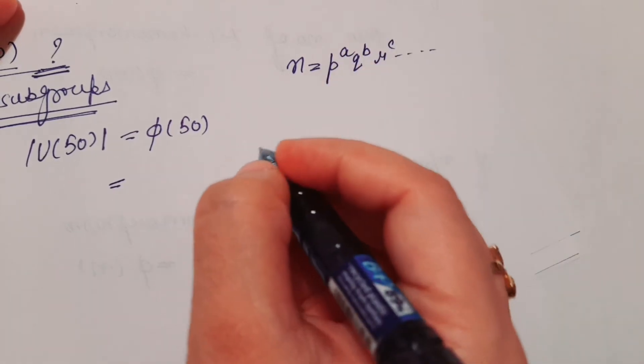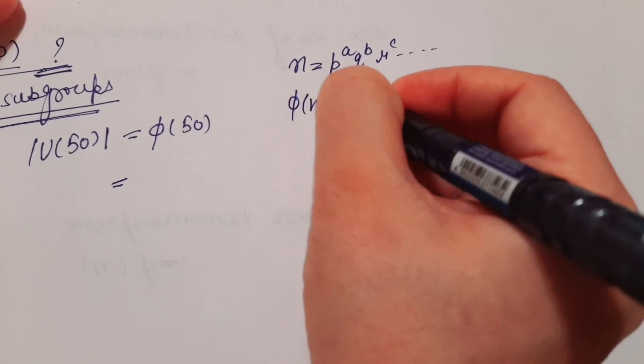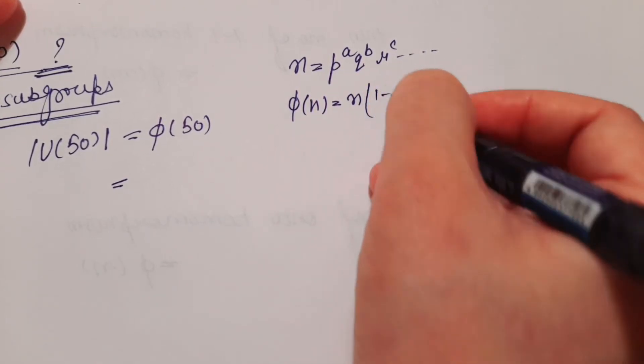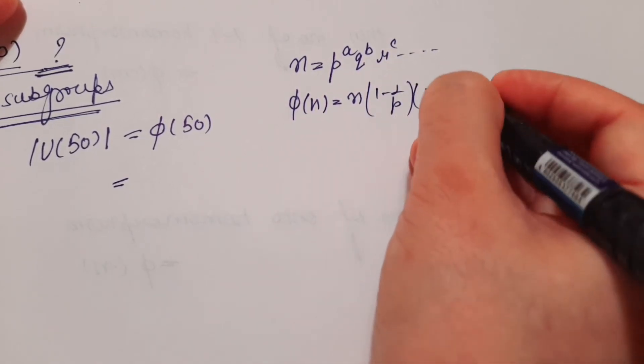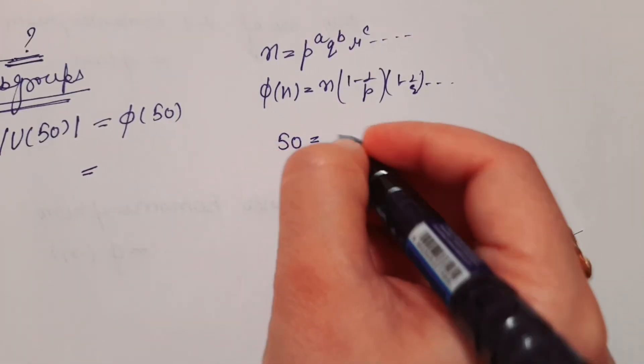φ(n) = n × (1 - 1/p) × (1 - 1/q) and so on. We have 50 here, and 50 = 2 × 5².